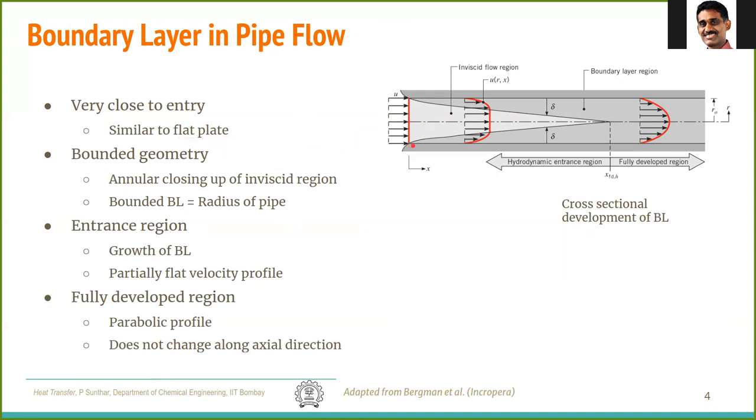Now for the boundary layer itself, it grows from here, but it cannot grow infinitely as it did in the flat plate because it is bounded by the pipe geometry. So the boundary layer is not only from here, but it is concentric. It is from all the surfaces, the boundary layer approaches the center. So if you look at a cross sectional view of this pipe, this is the outer surface, and at this location, this boundary layer is not only at one location but annular at all the locations.